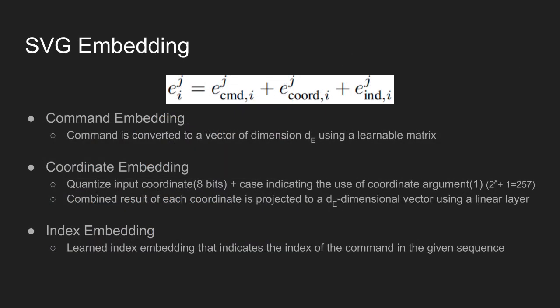Like word embedding vectors used in NLP fields, in order to let the encoder network reason between different commands C, every command is projected to a common continuous embedding space. The embedding space of SVG is formulated as a sum of three embeddings: command embedding, coordinate embedding, and index embedding.